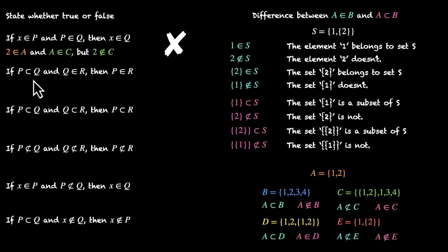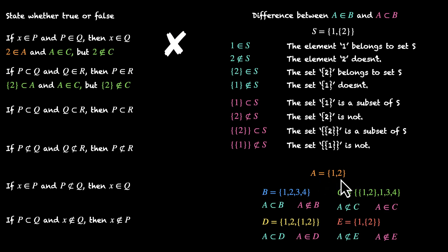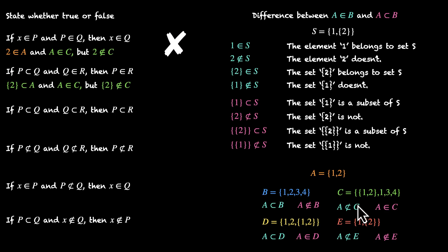Statement 2: if P is a subset of Q and Q belongs to R, then P belongs to R. Here's an example that proves this wrong. The set that contains 2 is a subset of A, and A belongs to C — the set {1,2} is an element of C. But the set that contains 2 does not belong to C; we don't have that as an element of C. The statement says it must — so this is false.